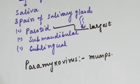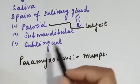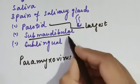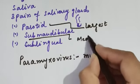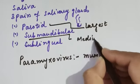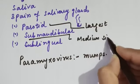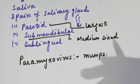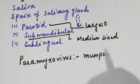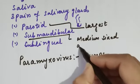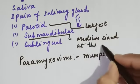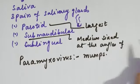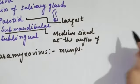Next are the submandibular glands. They are medium-sized glands, present at the angles of the lower jaw.